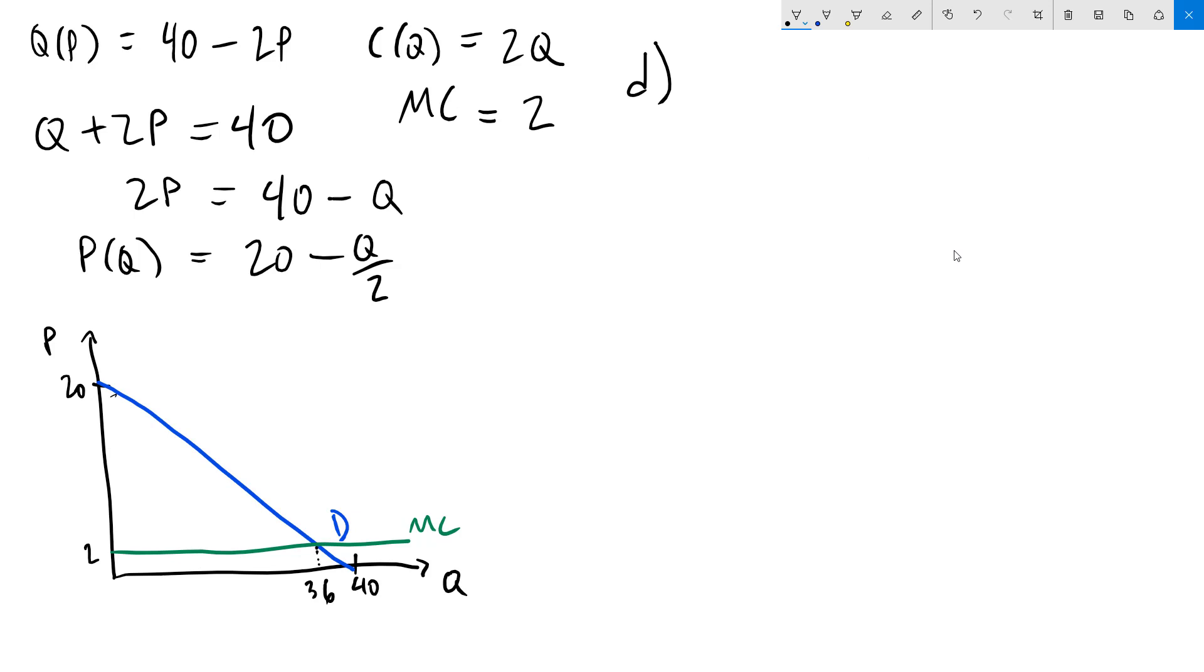The last part, Part D, is the most involved of all four and that is nonlinear pricing. In nonlinear pricing we are going to select two quantities, call them Q1 and Q2, which are sold at two different prices, P1 and P2. To sketch this onto the graph we're going to have Q1 at a price of P1 and Q2 at a price of P2.